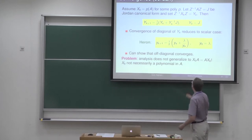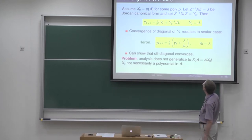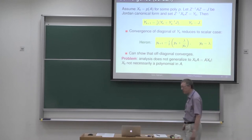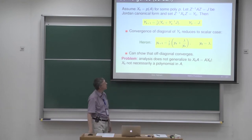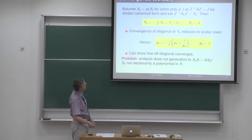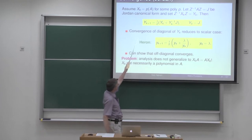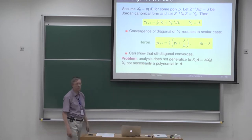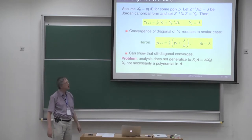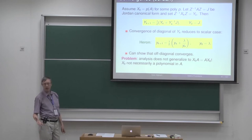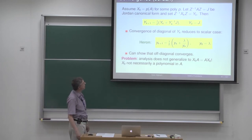What I'm going to do is plug in the Jordan form for A, redefine some new iterates Y, which are the transformed versions of the X's using the Jordan similarity Z, and you get a new iteration in the Y's which starts with J, the Jordan matrix, and iterates in that fashion. Because Y is upper triangular and the inverse of a triangular matrix is also triangular, it's easy to see that all the Y's will be upper triangular.